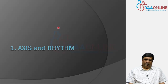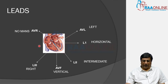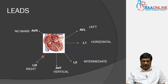To understand why, let us look at the positioning of all the limb electrodes and limb leads around the heart. Lead I is a horizontal lead, Lead II is an intermediate lead — between horizontal and vertical. AVF is a vertical lead, Lead III is a right-sided lead, AVL is a left-sided lead, and AVR is called no man's land.